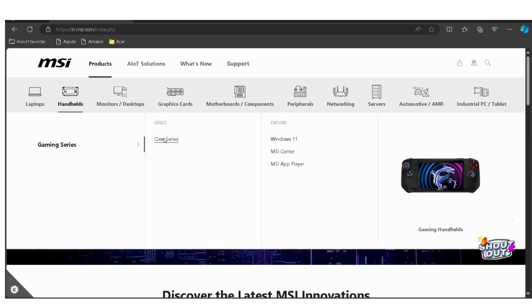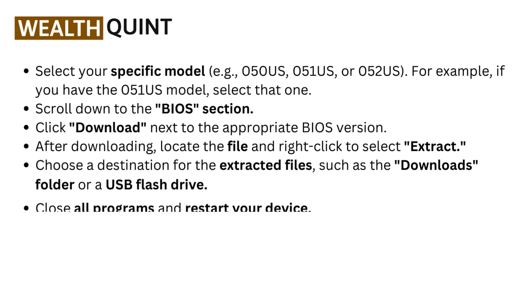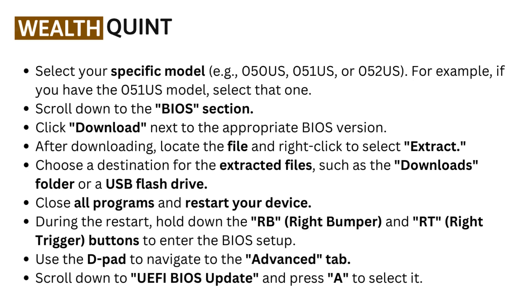Click on the Products tab, select Handheld, and then choose MSI CLAW. Navigate to the Support section and select your specific model, for example 050 US, 051 US, or 052 US. If you have the 051 US model, select that one. Scroll down to the BIOS section and click Download next to the appropriate BIOS version. After downloading, locate the file and right-click to select Extract.